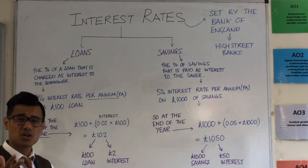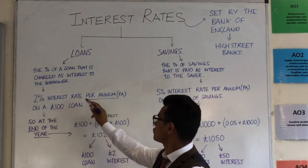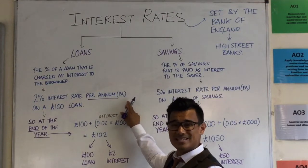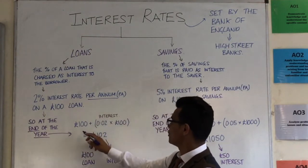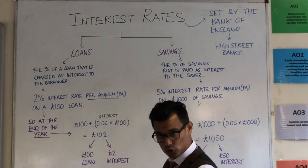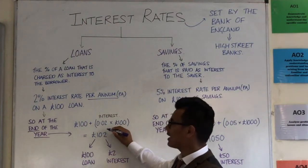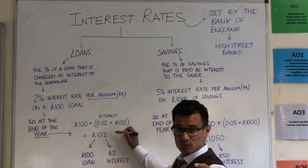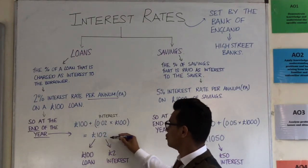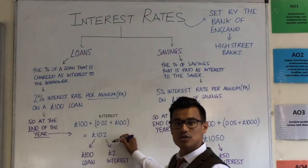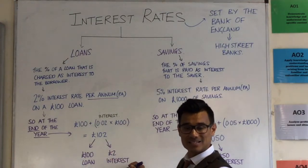Let's take an example. Imagine you've taken a loan out for £100 and it's based on a 2% interest rate per annum — per annum means per year. So at the end of the year you would have to pay back the £100 because you loaned that, plus what the interest rate calculates to. Take 2%, which is 0.02, and times that by the loan of £100. That comes to £102 — £100 was the original loan and £2 is the interest.